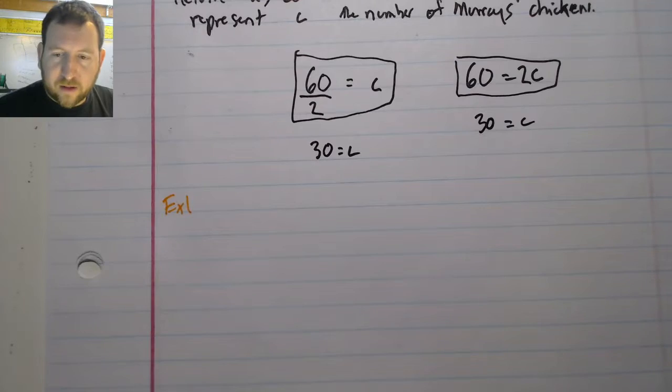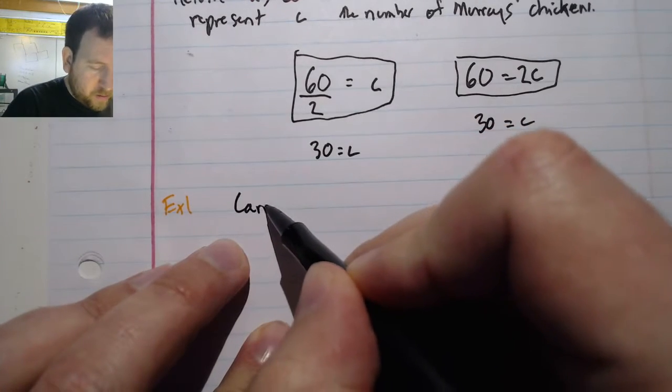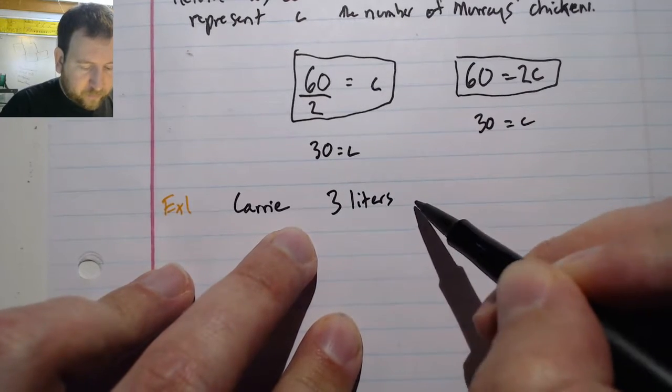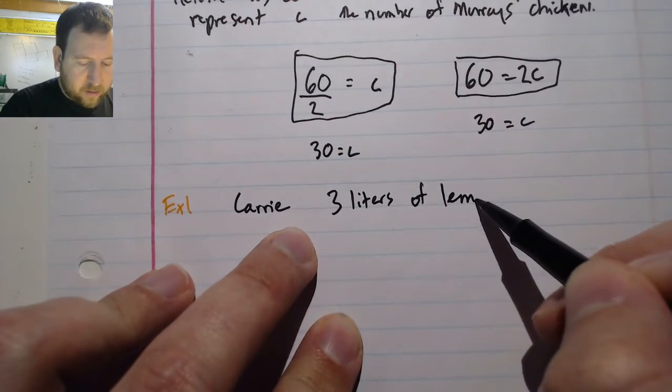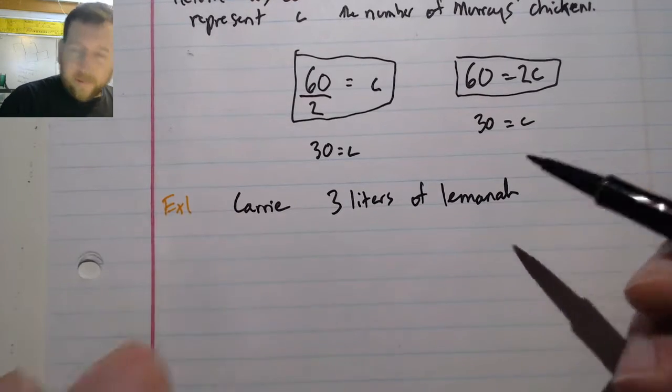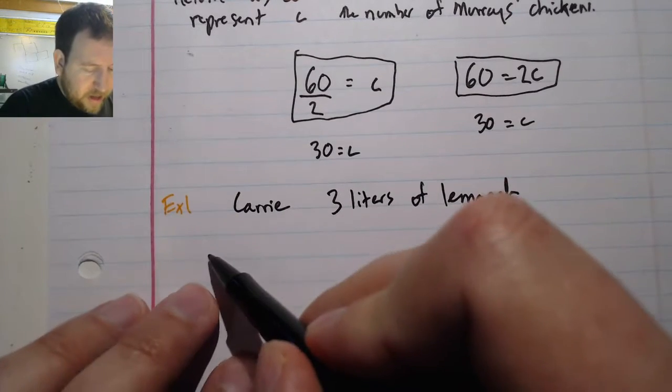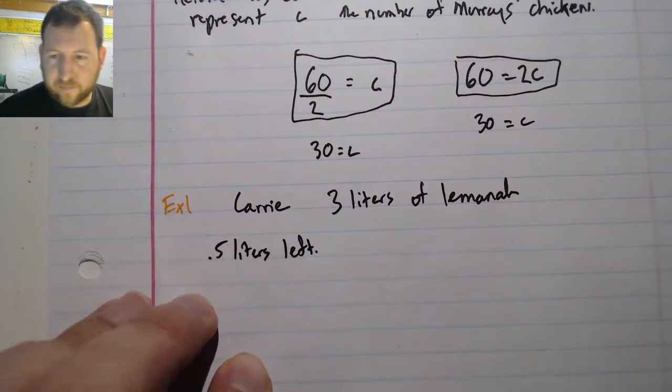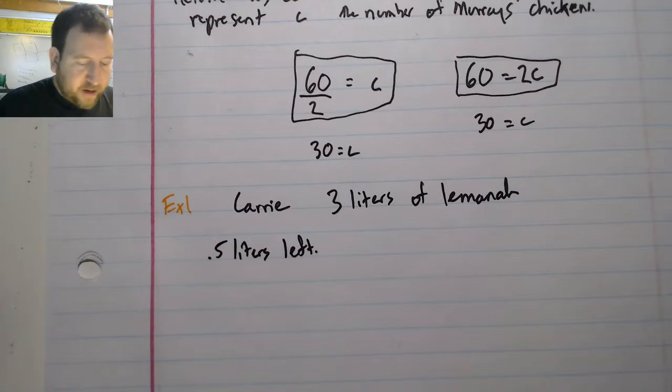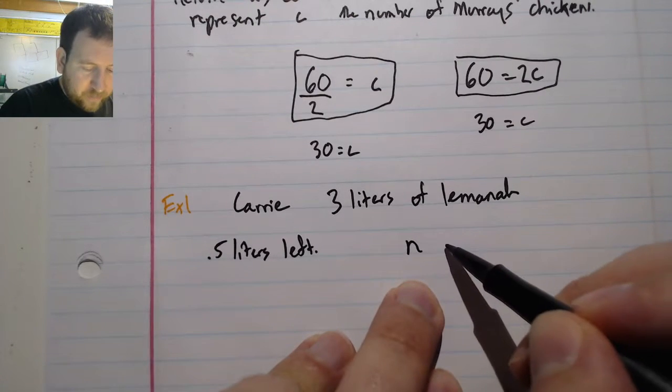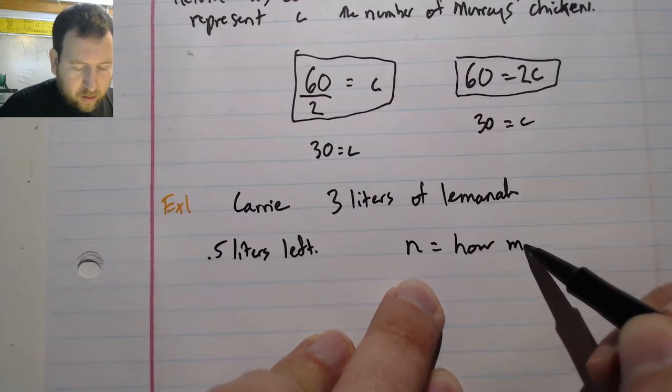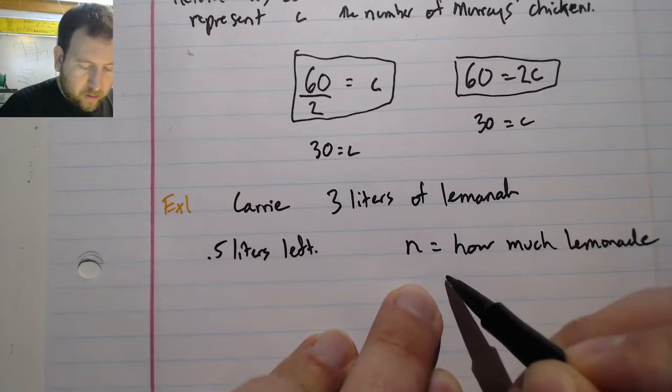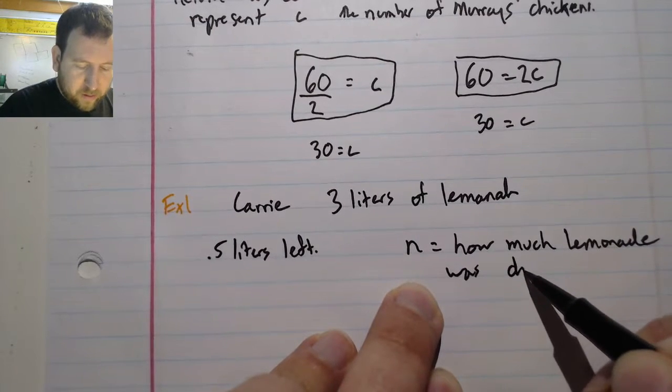Okay, first we have Carrie. And she made 3 liters of lemonade. And then at the end of the day, she had 0.5 liters left.